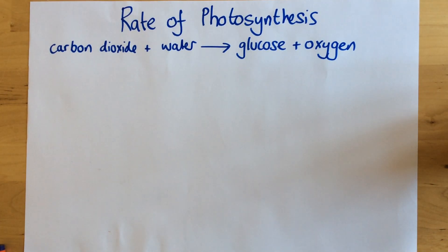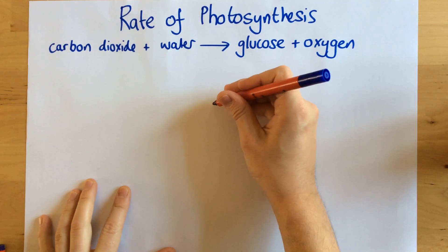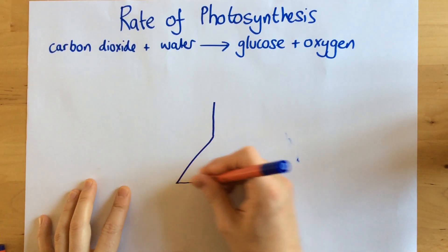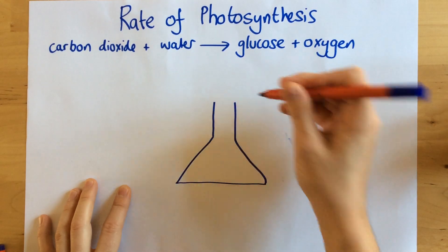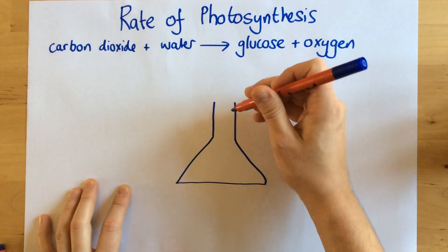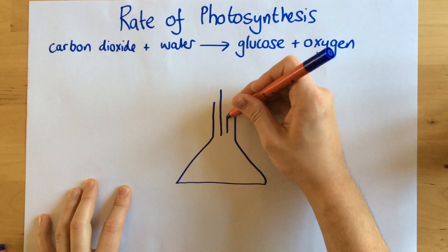So in order to find the rate of photosynthesis, we remember the rate is just essentially how quickly is this process happening. This experiment is to see how light intensity affects the rate of photosynthesis.